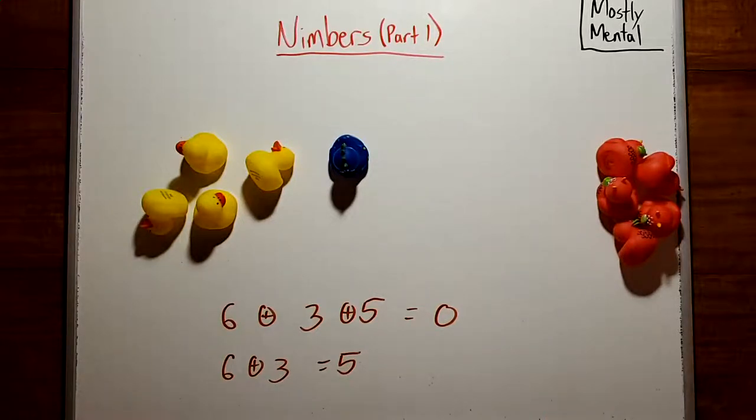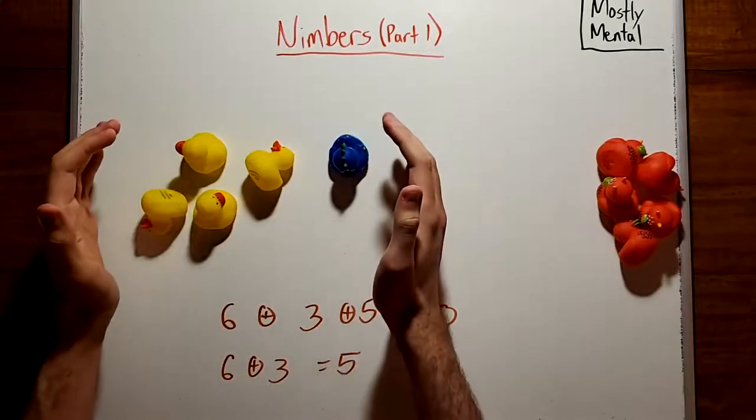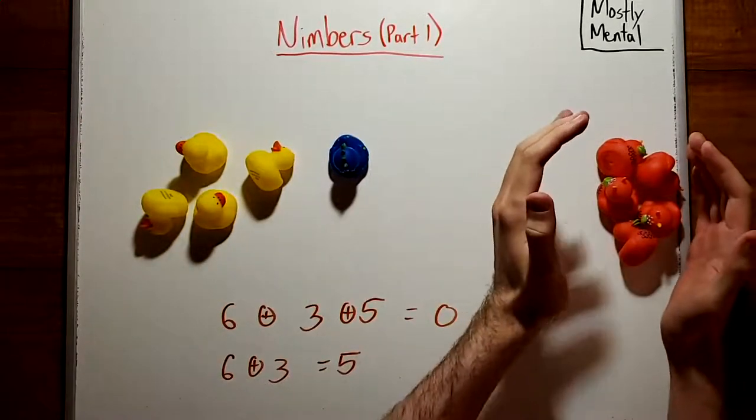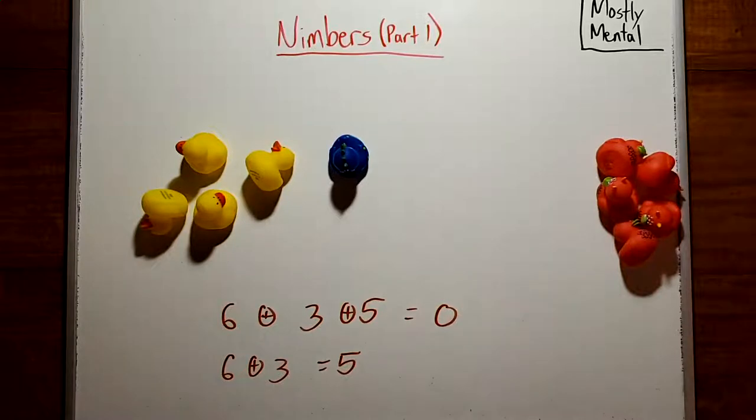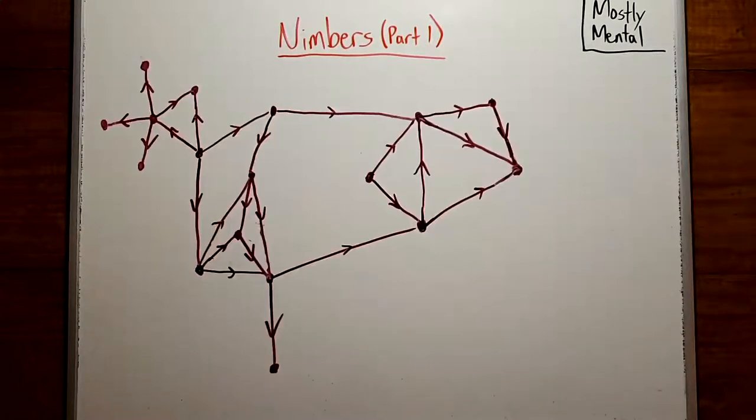So in some sense, there's a balance between this game with two piles and this game with one that we can find by playing the two games together. We can push this idea a bit further. There's a theorem of Sprague and Grundy which says that any position in an impartial game, that is a game where the players follow the same rules, balances in this way with some single pile in Nim.